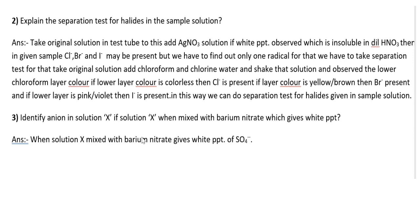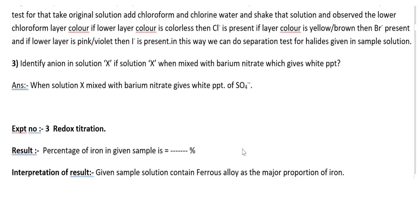To find out which specific halide radical is present, take the original solution, add chloroform and chlorine water, then observe the lower chloroform layer. The colour of the chloroform layer indicates whether Cl⁻, Br⁻, or I⁻ is present. Question 3: Identify the anion in solution X if solution X, when mixed with barium nitrate, gives white precipitate — then SO₄²⁻ ion is present.